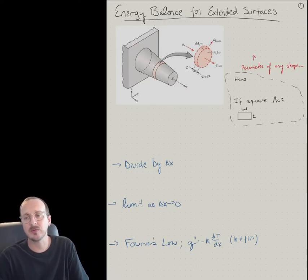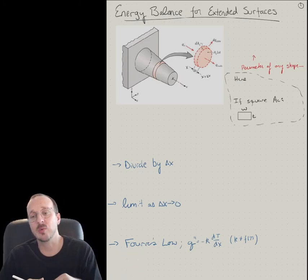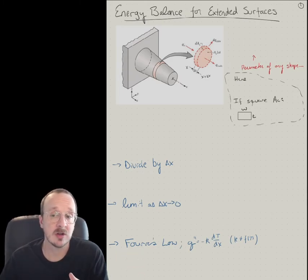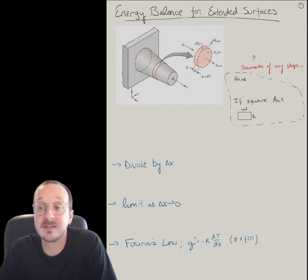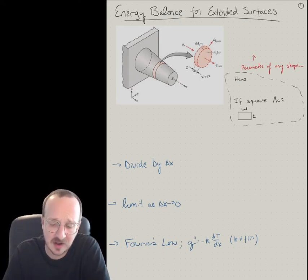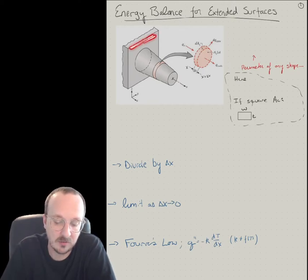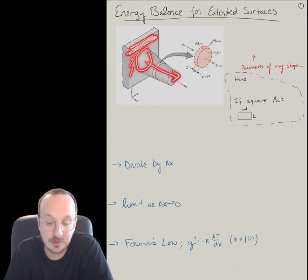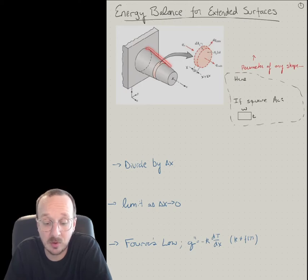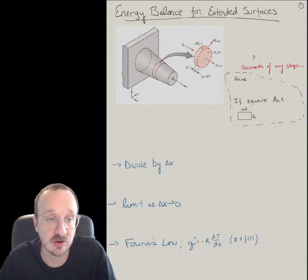In this video we're going to talk about the energy balance for extended surfaces or fins — how do we derive the differential equation to solve the temperature distribution and heat flux down a fin. Here's an example illustration of an extended surface where you have a flat plate as the base of the fin, and then a fin of arbitrary shape sticking off of it. In this particular example, the cross-sectional area changes down the length of the fin, but we're going to derive this for the very general case.